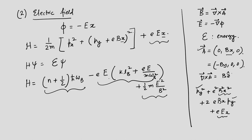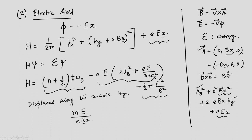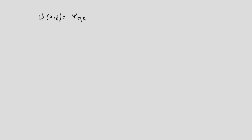The electrons are displaced along the x-axis by an amount mE/(eB²). This leads to a wave function ψ_{n,k} that is displaced from its original position by this amount, but the qualitative nature of the wave functions remains the same.